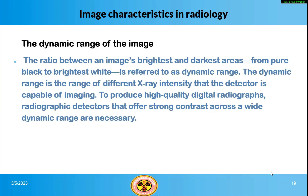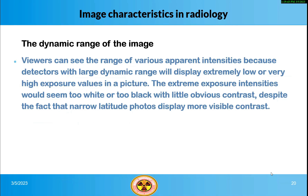The dynamic range of the image is the ratio between an image's brightest and darkest areas, from pure black to brightest white. The dynamic range is the range of different x-ray intensities that the detector is capable of imaging. To produce high-quality digital radiographs, radiographic detectors that offer strong contrast across a wide dynamic range are necessary. Detectors with large dynamic range will display extremely low or very high exposure values in a picture, while extreme exposure intensities would appear too white or too black with little obvious contrast in narrow latitude images.